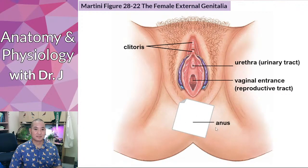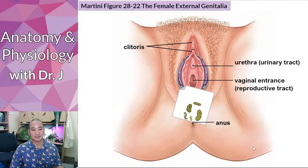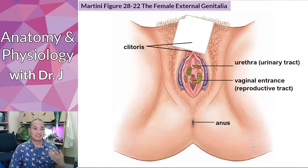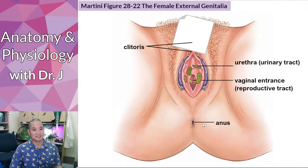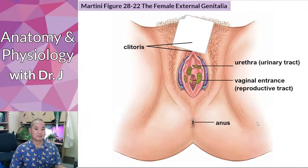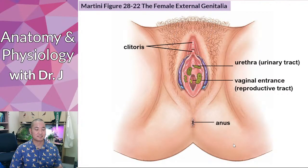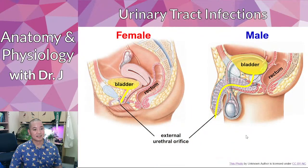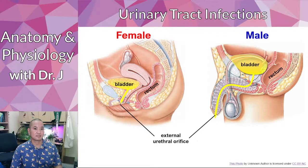Why does wiping direction matter? If you wipe from posterior to anterior, any bacteria in that area will come along for the ride toward the vagina or urethra. This is why it's advised to wipe from anterior to posterior — even though it might be mechanically easier the other way — so you go from clean to potentially contaminated.